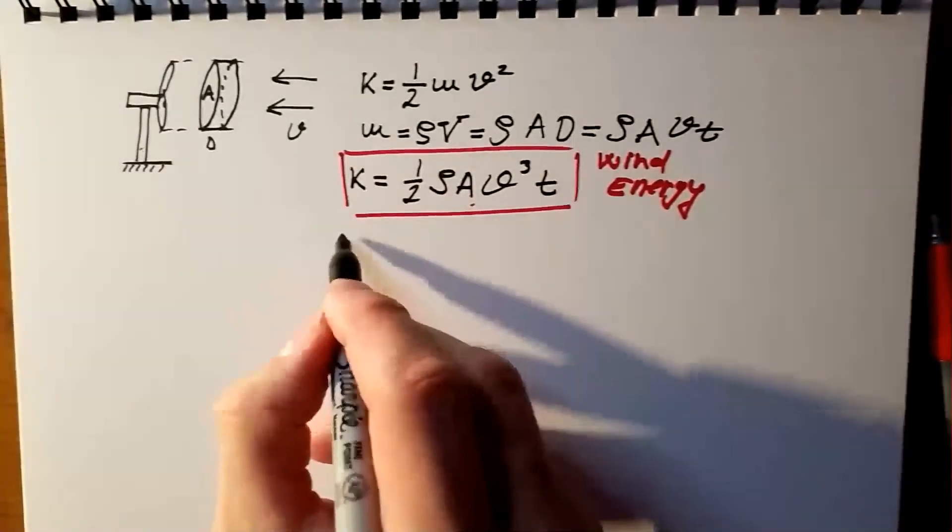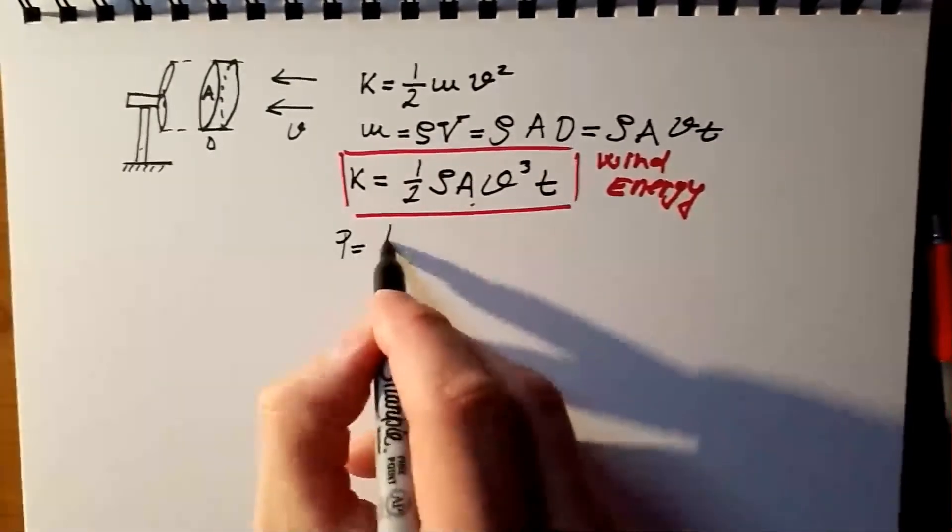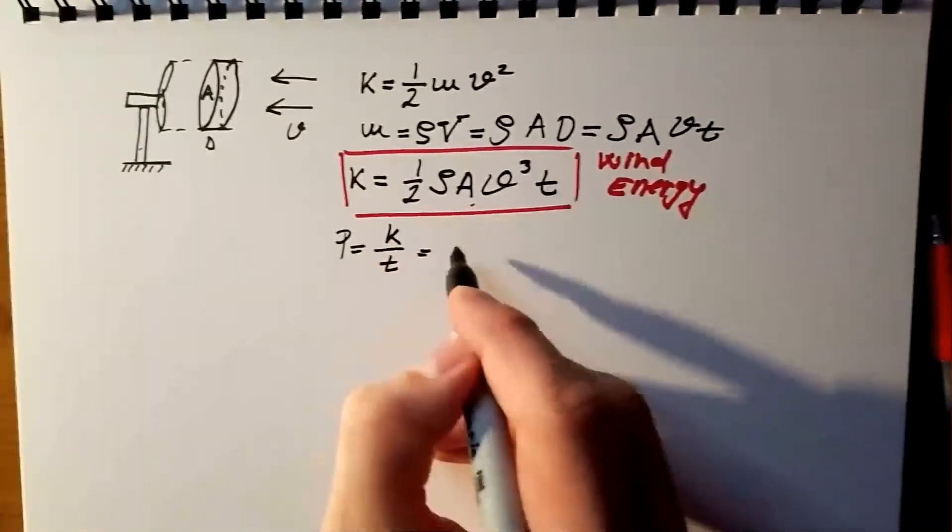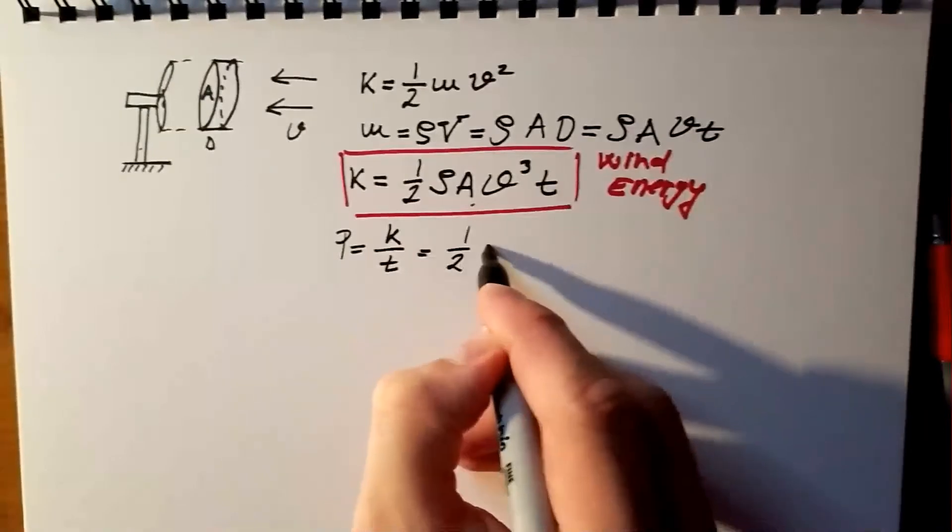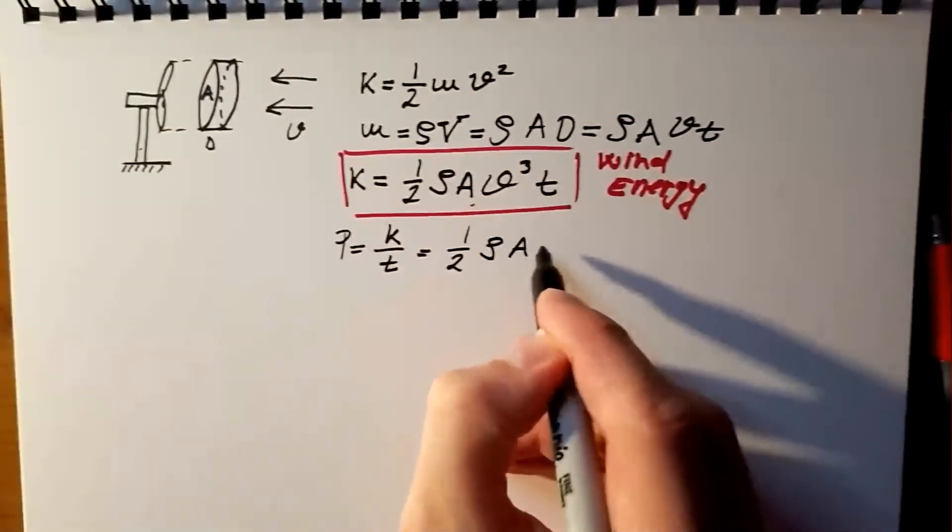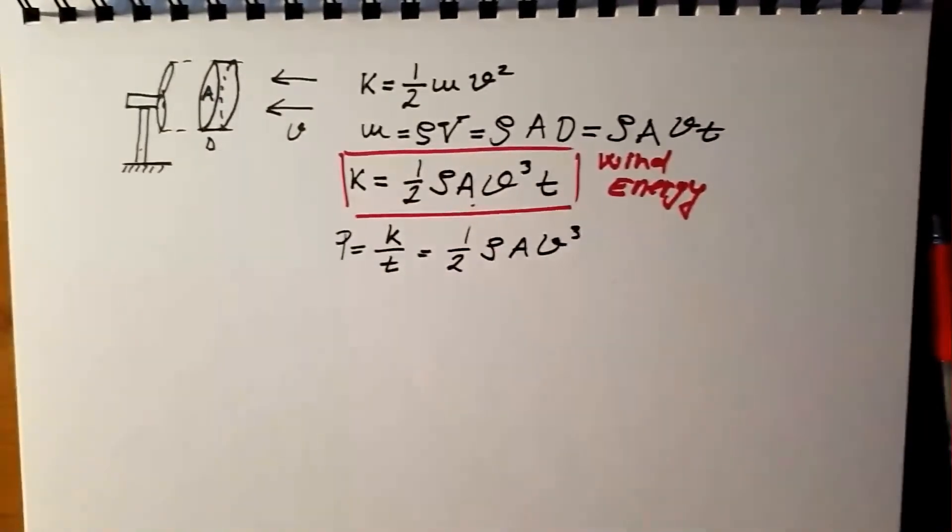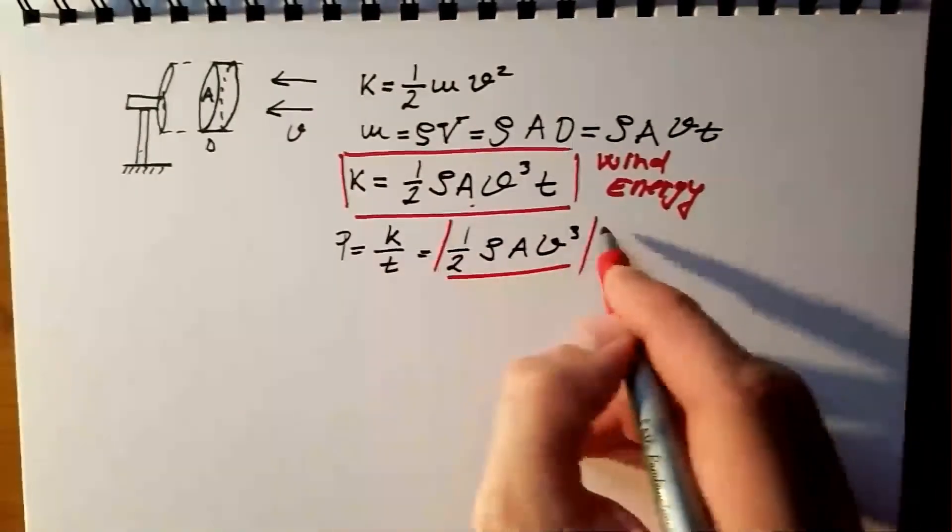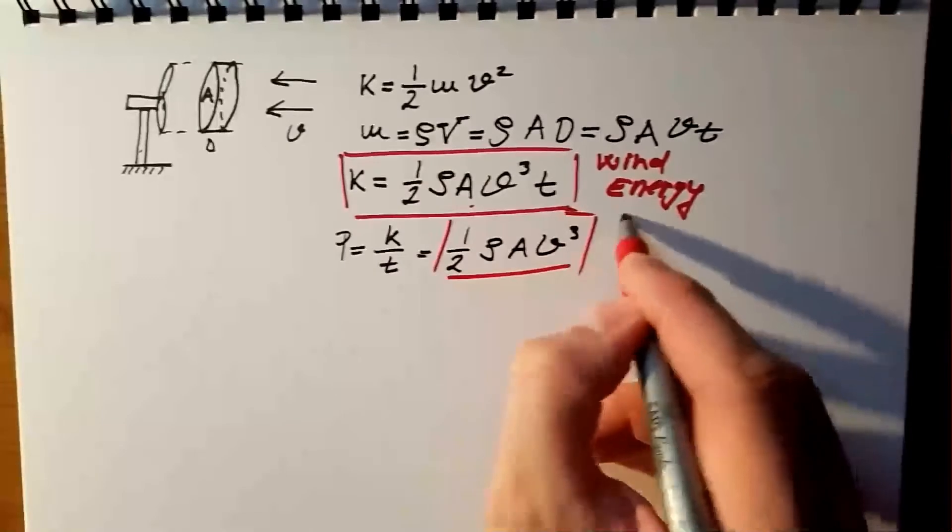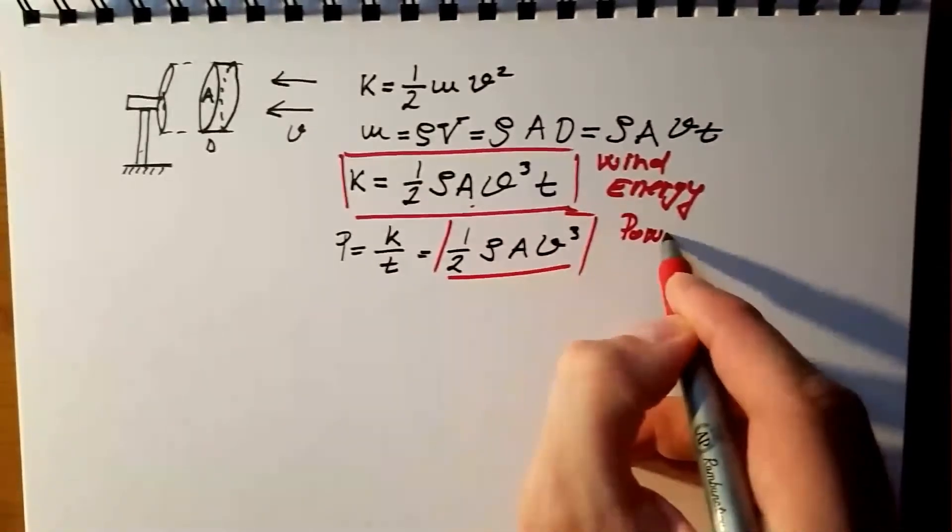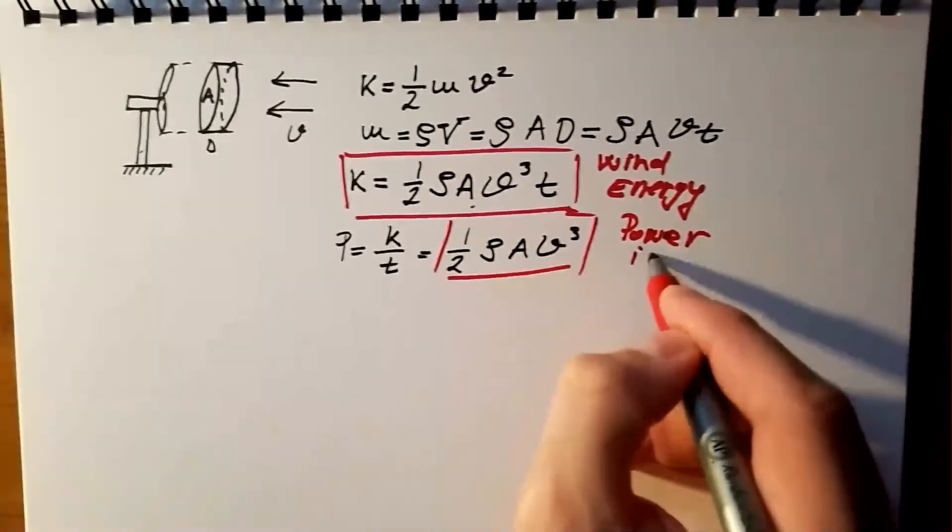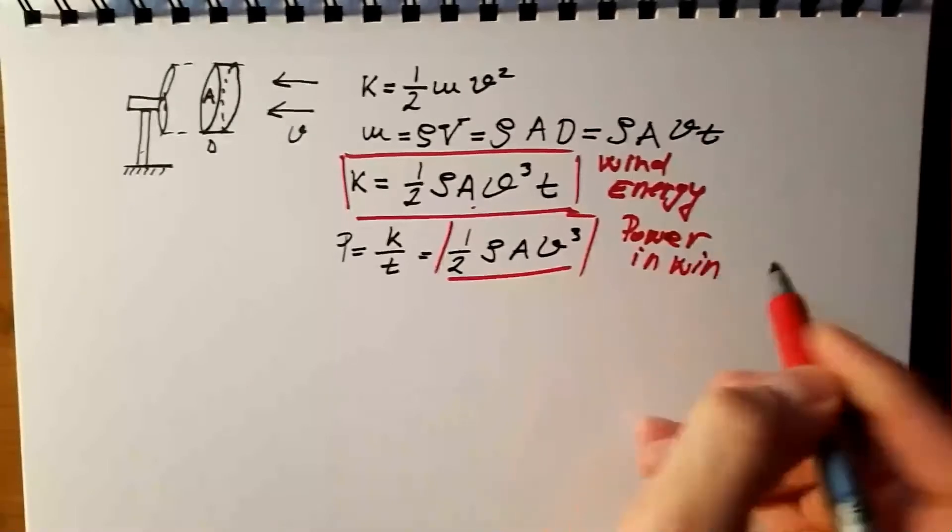Now, as I just said, power is energy, in this case kinetic energy over time, so this is simply, I just remove this t, it's ½ ρ A V to the power of 3. And, this is now equation for wind power. Let's call power in wind.